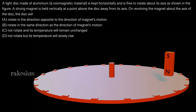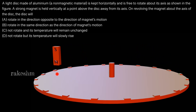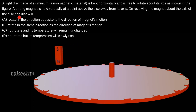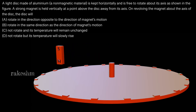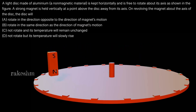The magnet is held vertically and away from the axis of the disc. On revolving the magnet about the axis of the disc, this magnet is rotated about this axis. The first option asks whether the disc will rotate in the direction opposite to the direction of the magnet's motion.